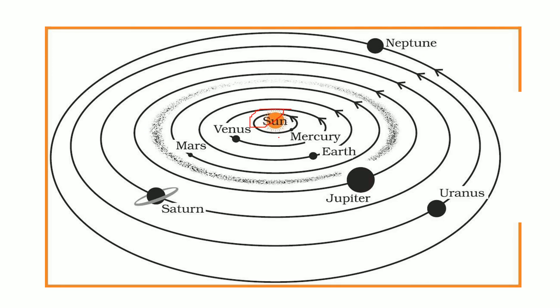The actual version would be: we have Sun, then first is Mercury, Venus, Earth, Mars, Jupiter, Saturn, then Uranus, then Neptune. So this is all about the solar systems. Thank you so much and take care of yourself.